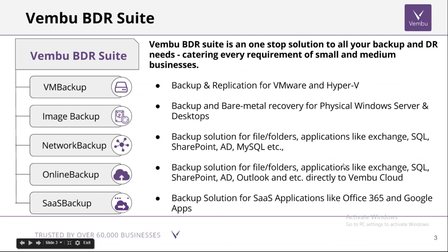Wambu BDR Suite is a one-stop solution for all your backup and disaster recovery needs for small and medium businesses. It includes Wambu VM Backup for virtual environments like VMware and Hyper-V; Wambu Image Backup for bare-metal recovery of physical Windows servers and desktops; Wambu Network Backup for file and folder level backup and applications like Exchange, SQL, SharePoint, Active Directory, and MySQL. Wambu Online Backup is a cloud-based solution backing up directly to Amazon-hosted cloud servers, and Wambu SaaS Backup covers applications like Office 365 and Google Apps.